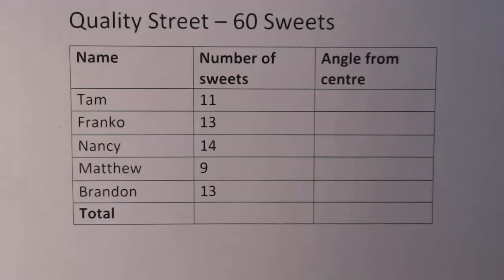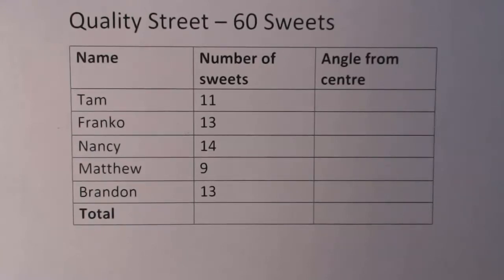Hey, so this is a first video in absolute ages. It's about converting all this data and drawing into a pie chart. So we've got 60 Quality Street sweets and we've got five folk basically shared all the sweets.